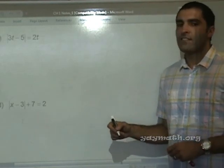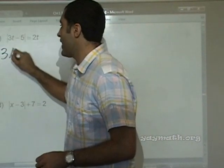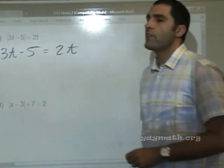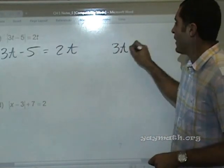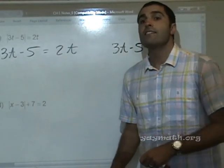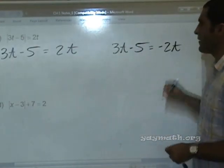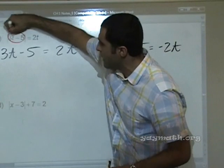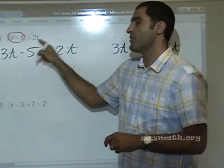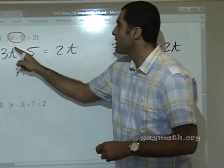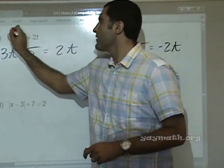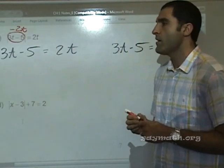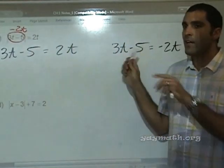Next problem: absolute value of 3t minus 5 equals 2t. Bifurcating — 3t minus 5 can result in positive 2t, or negative 2t. Because if 3t minus 5 resulted in 2t, that would be the absolute value of 2t, which is 2t. Or if it resulted in negative 2t, the absolute value of negative 2t is also positive 2t. This two-equation breaking-up is called bifurcating.